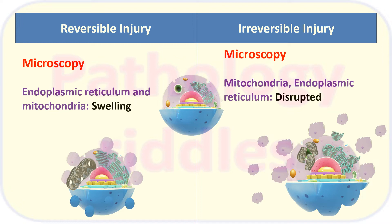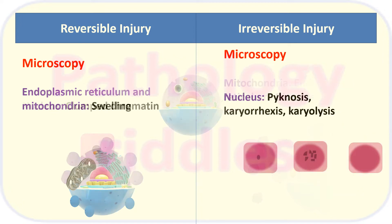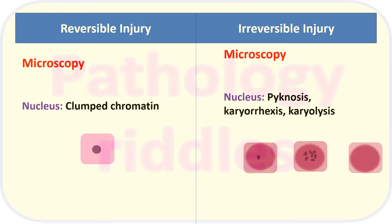In cases of irreversible injury, the membranes of the mitochondria and endoplasmic reticulum will be disrupted. Regarding the nucleus: in reversible injury there will be clumped chromatin, but in cases of irreversible injury the nucleus will show pyknosis, karyorrhexis, and karyolysis.